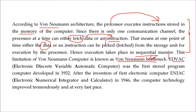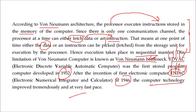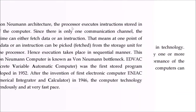EDVAC — Electronic Discrete Variable Automatic Computer — was the first stored program computer, developed in 1952, after the invention of the first electronic computer ENIAC — Electronic Numerical Integrator and Calculator — in 1946. After this, computer technology took exponential growth and advanced at a very fast pace.